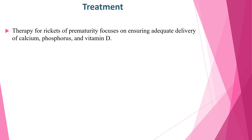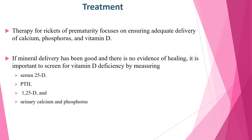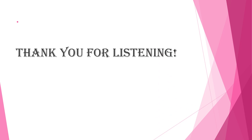Regarding treatment of rickets of prematurity: therapy focuses on ensuring adequate delivery of calcium, phosphorus, and vitamin D. If mineral delivery has been good and there is no evidence of healing, it is important to screen for vitamin D deficiency by measuring serum 25-hydroxyvitamin D, PTH, 1,25-dihydroxyvitamin D, and sometimes determining urinary calcium and phosphorus excretion. This concludes our lesson on rickets of prematurity. Thank you for listening.